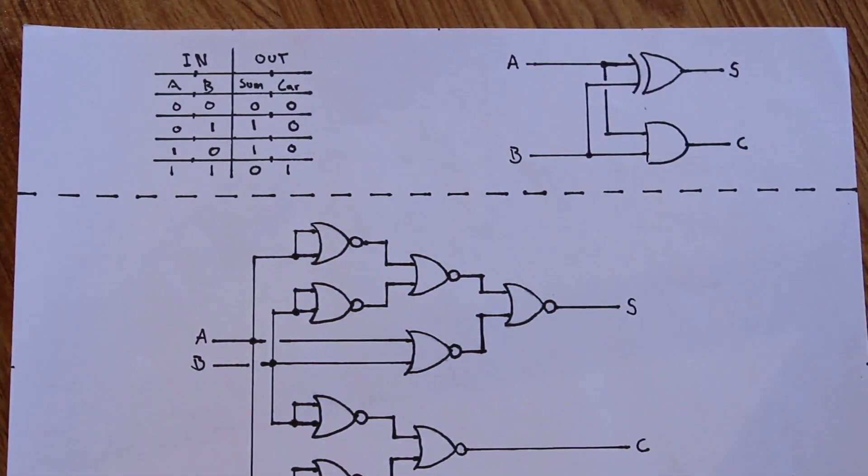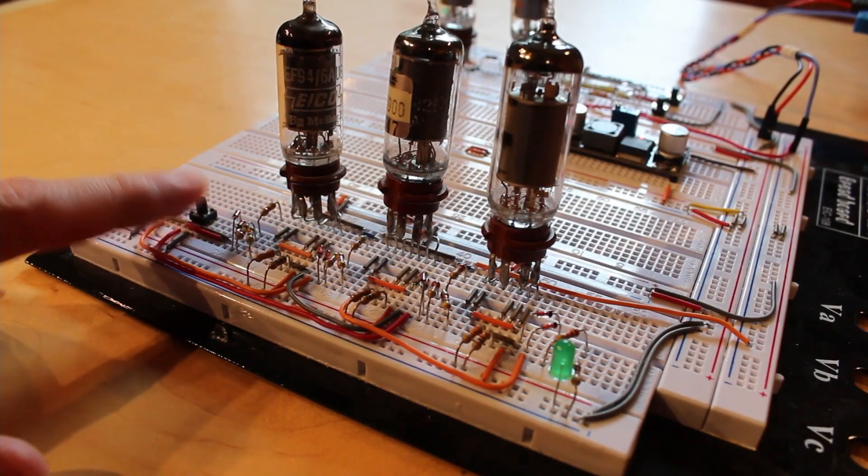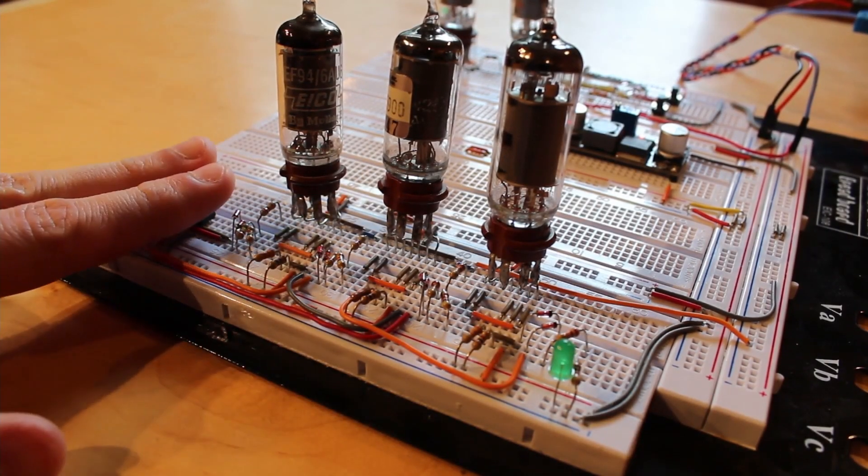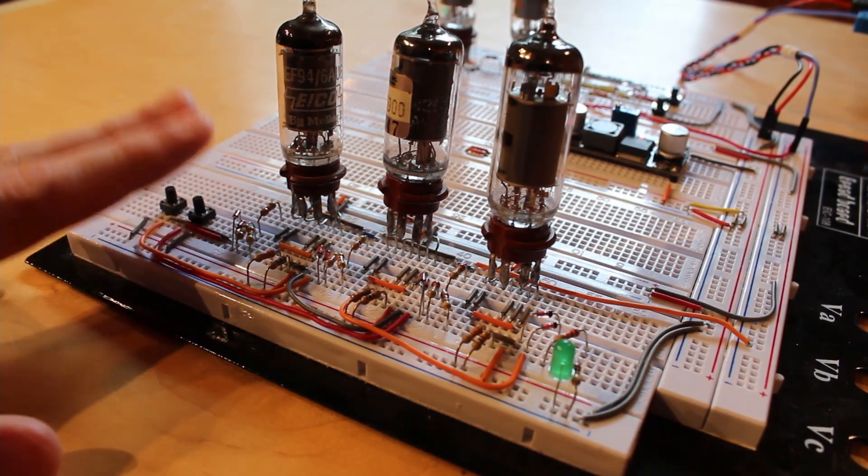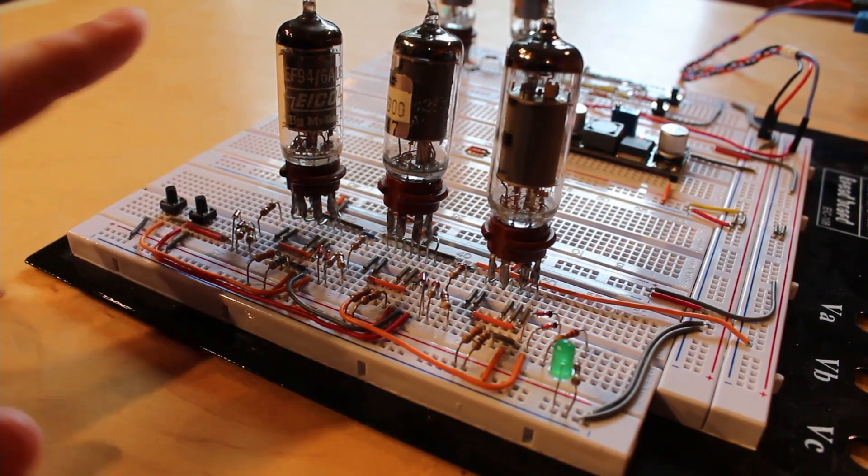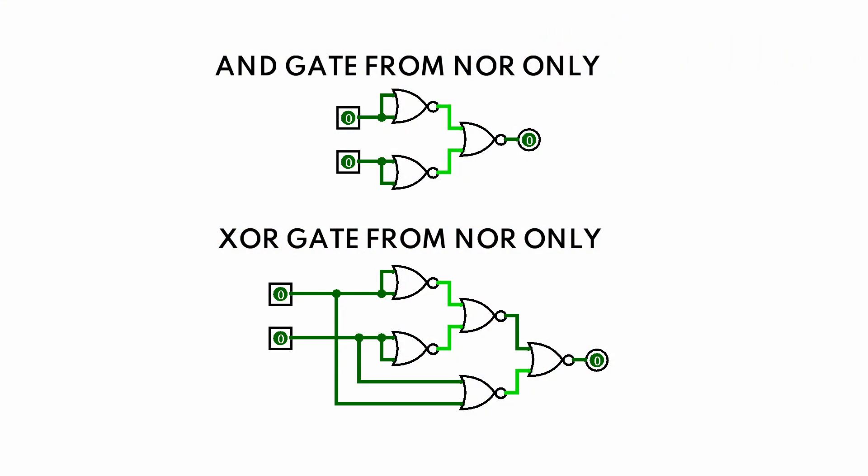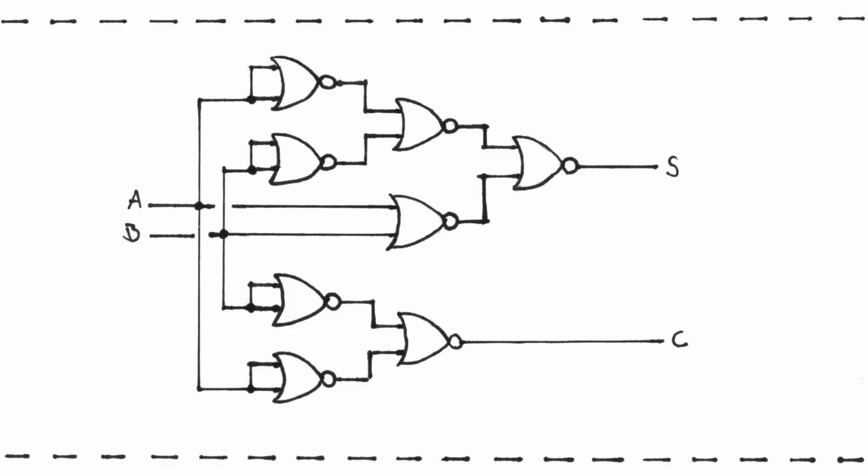But if we remember, building an exclusive OR gate actually took quite a bit of effort, and building an AND gate also takes quite a bit of effort. So my next idea was to build the entire thing out of NOR gates. A NOR gate is a universal gate, so you can build an exclusive OR gate out of NOR gates, and you can build an AND gate out of NOR gates. And that's what's shown here, but you can see that it gets a little wild.